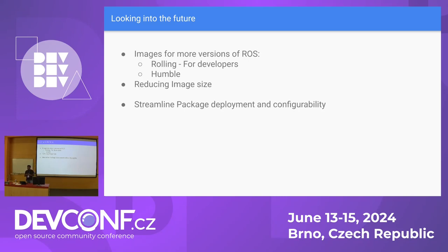Currently when we create the image it is a bit big. We need to find ways to reduce the image size. We also need some additional things: when you have ROS, you need to be able to deploy ROS packages. It is a container so you can deploy ROS packages with git or by running commands in the container. But we want to streamline that process so that package deployment and configurability become easy.